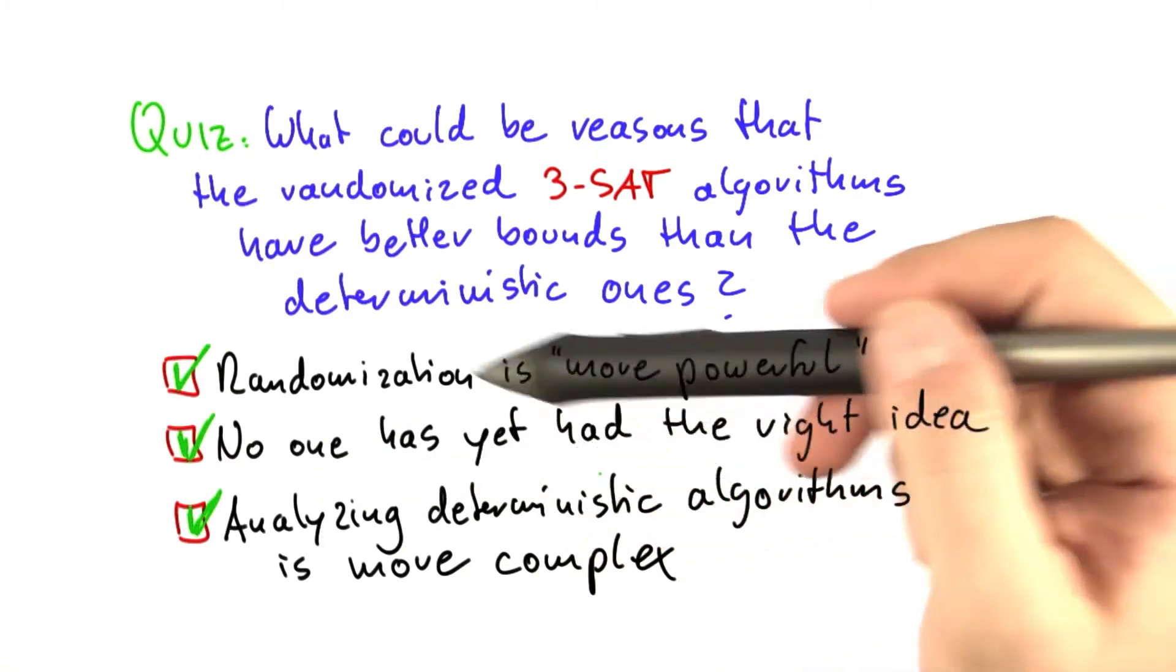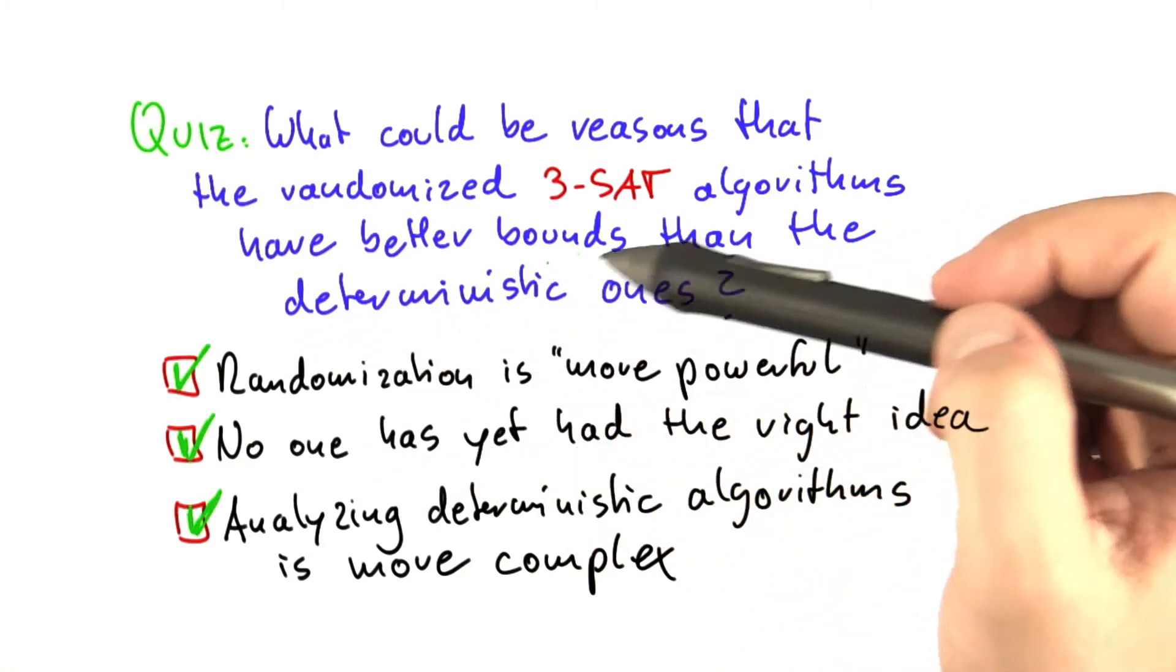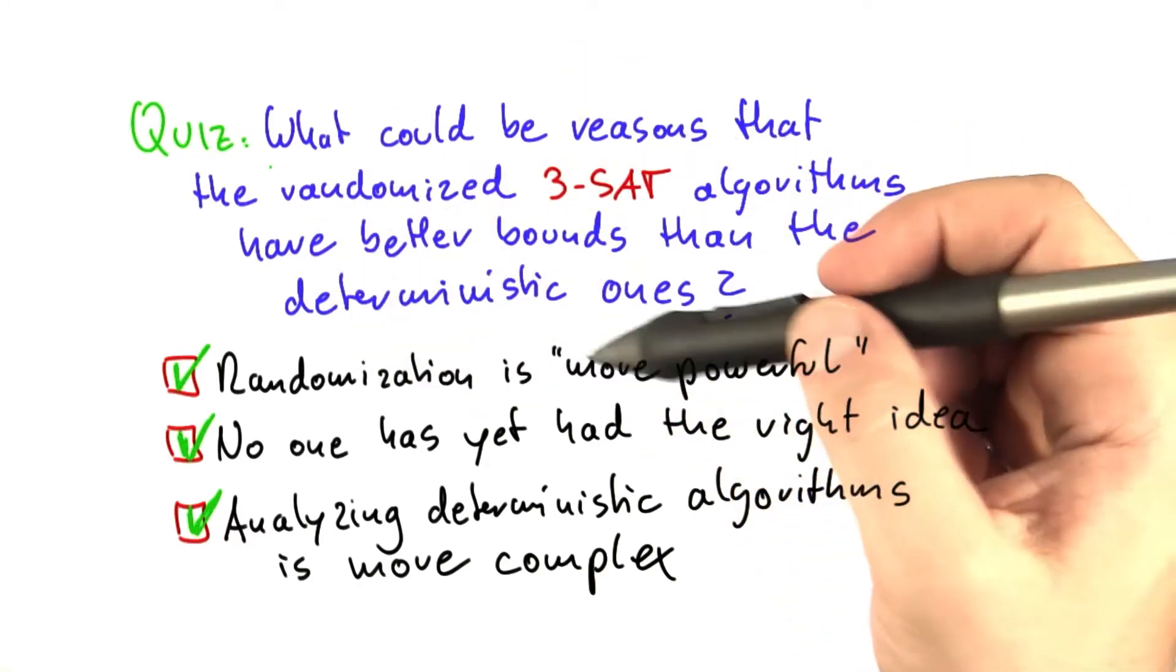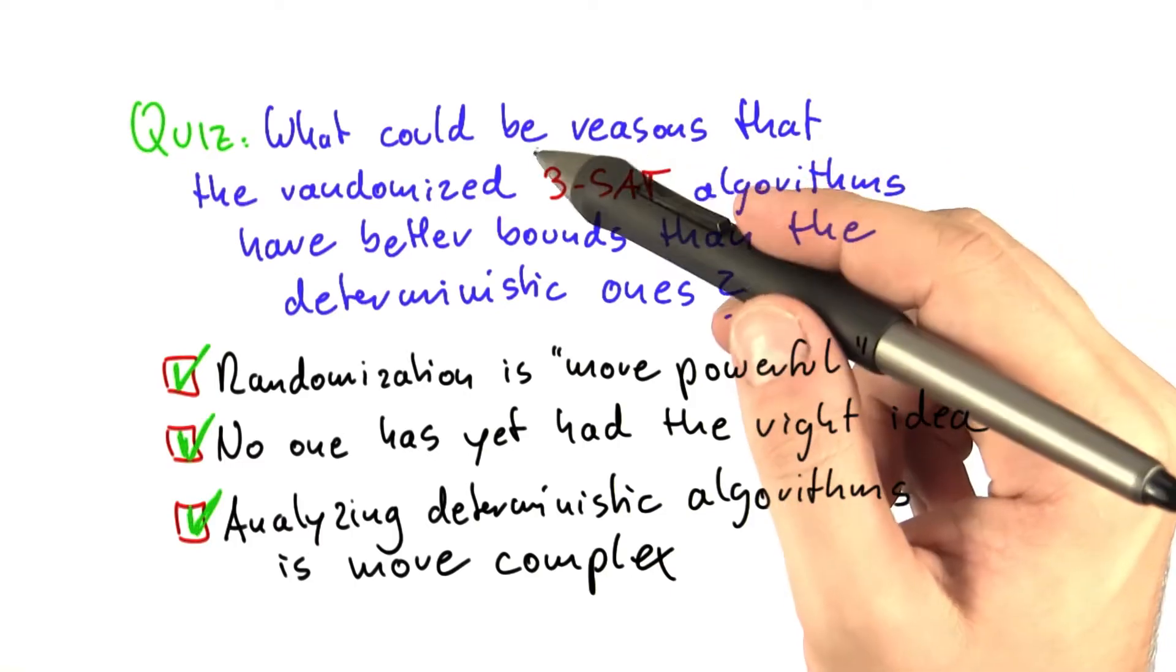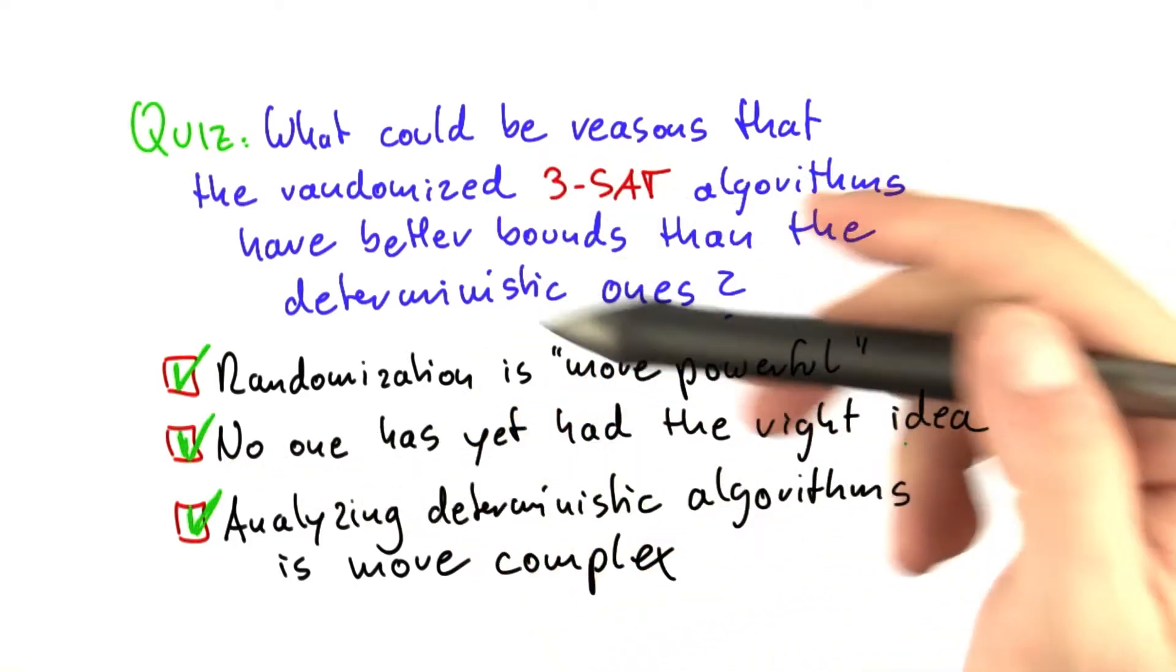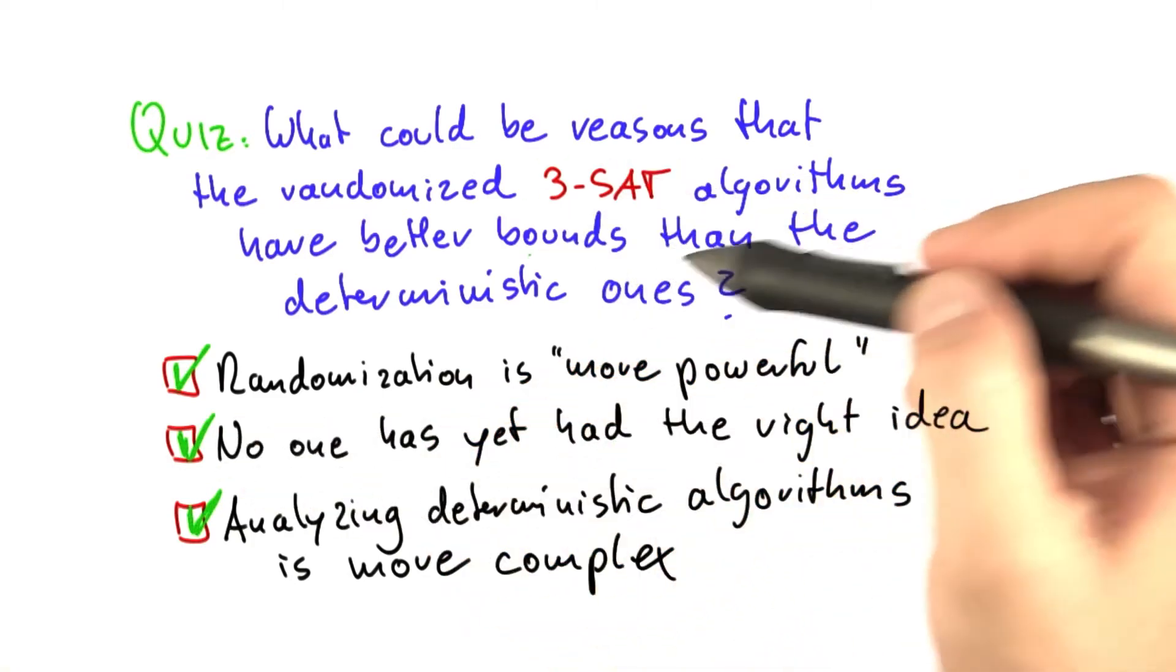Of course, it could also be that simply no one has had the right idea yet how to design a really good deterministic algorithm for 3-SAT. Of course, the length of the table that I've just shown you suggests that people have put a lot of thought into this. But maybe tomorrow somebody comes up with a really good idea for a comparably fast exponential time algorithm for 3-SAT.